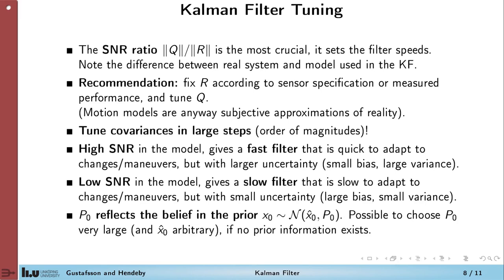When tuning, if you have high Q over R, that gives a filter that's quick to respond to changes and adapt to maneuvers, for example. But this comes at the price of being more noisy. So you get a small bias in your estimates, but you get a large variance instead.